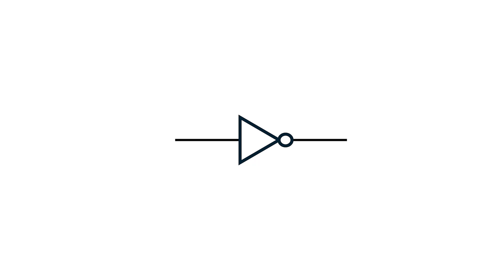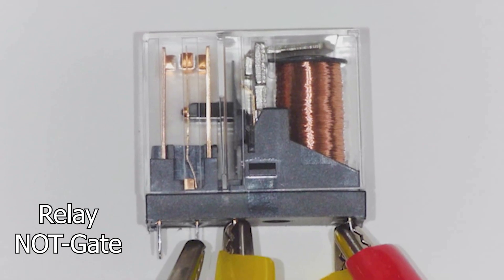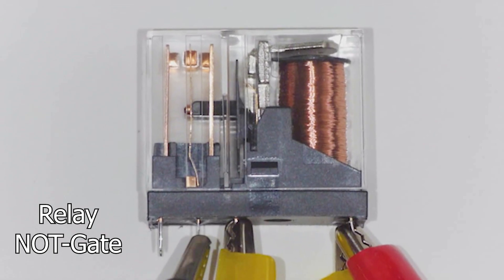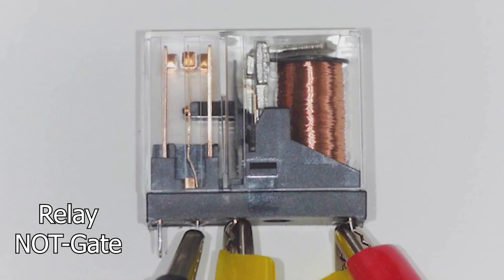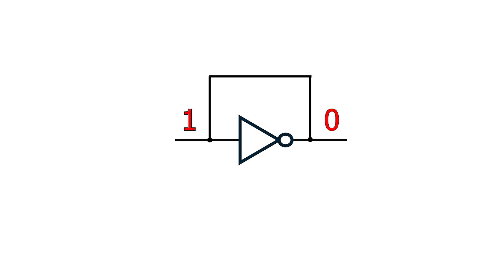We've been looking at ways of storing and manipulating data, and we first looked at the single inverter with its output connected up to its input. This circuit is unstable where it spontaneously oscillates between two states. Technically this is an example of a race around condition or hazard condition. Race around conditions lead to unpredictable and frankly undesirable logic conditions, caused by this feedback loop which is constantly changing the output.